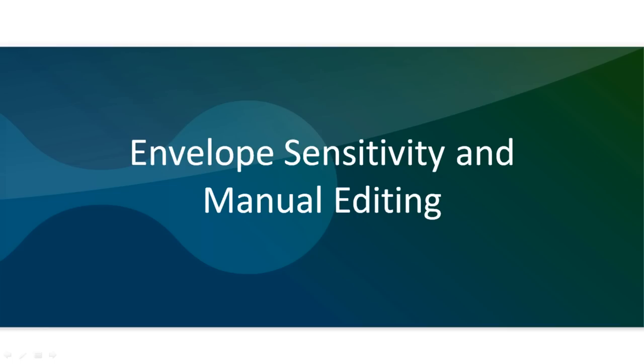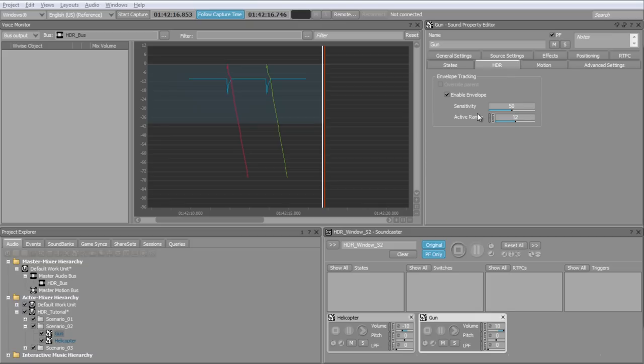It is possible to modify the sensitivity of the amplitude envelope analysis by using the sensitivity fader. You can also preview the result of the analysis in the source editor view.